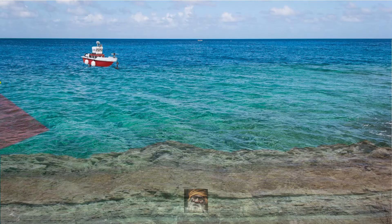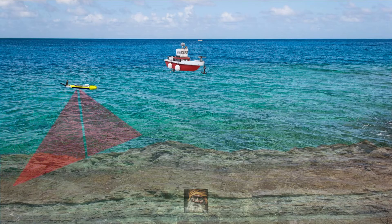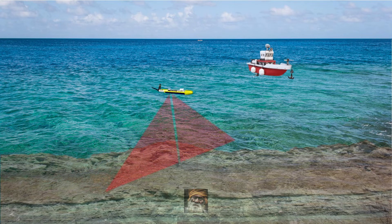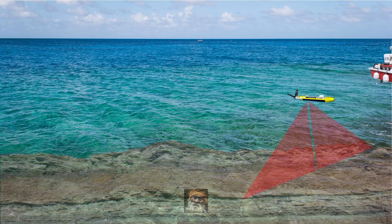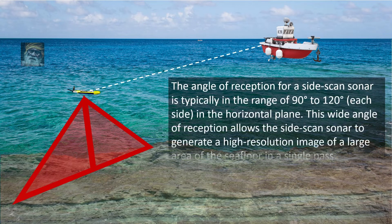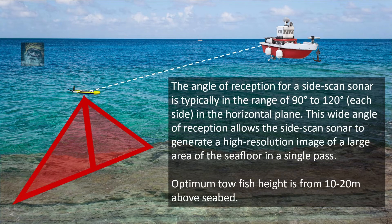Sidescan sonar is a towed equipment with transducers on either side of the towfish. The angle of reception is typically between 90 to 120 degrees each side in the horizontal plane. To get optimal data resolution, towfishes are normally kept between 10 to 20 meters above the seabed during the survey.